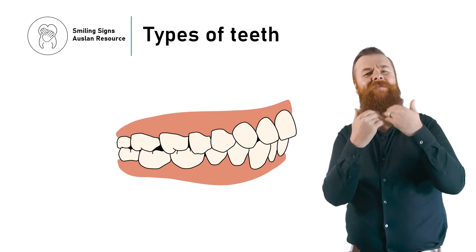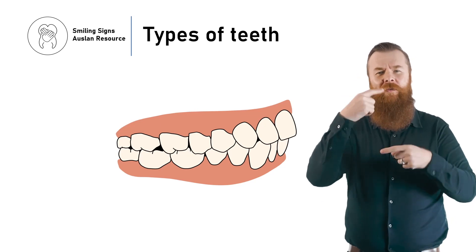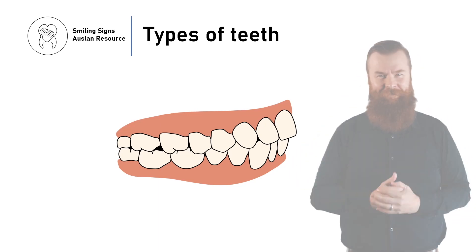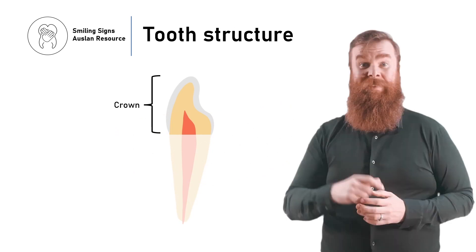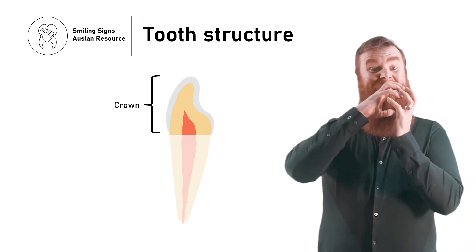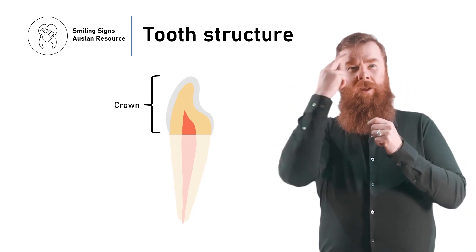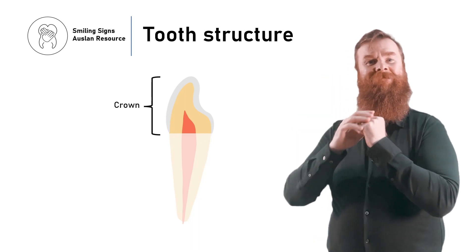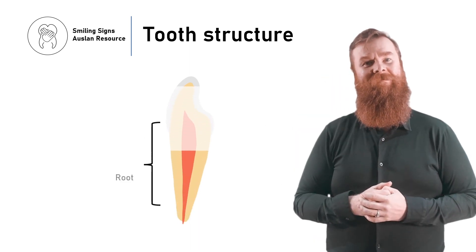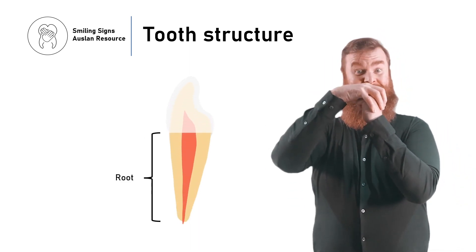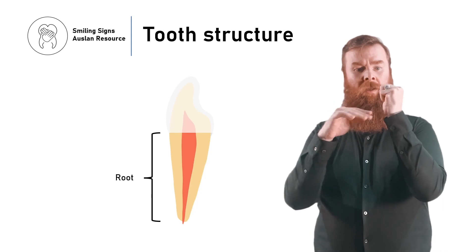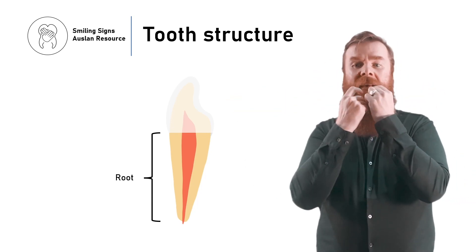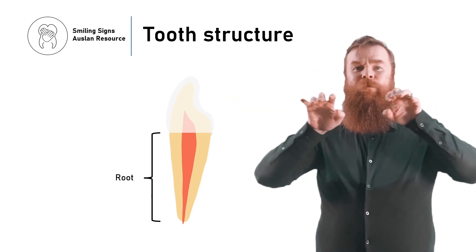Let's discuss different parts of the tooth. The part of the tooth that you can see in the mouth is called the crown. The root is the part of the tooth that sits under the gums and holds the tooth in the jaw bone.